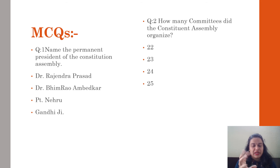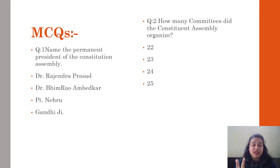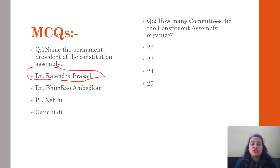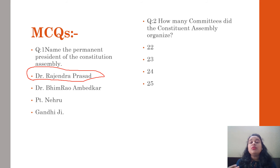The first question in the Post-Colonial India chapter: who was the permanent president of the Constituent Assembly? The second question is: how many committees did the Constituent Assembly organize — 22, 23, 24, or 25? The correct answer is 22. You should check your answers.